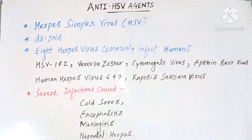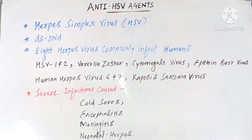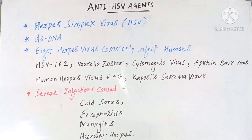These are the following severe infections caused by HSV virus: first, cold sores; second, encephalitis; third, meningitis; and fourth, neonatal herpes. Apart from these severe infections, HSV virus also causes common recurrent infections affecting the skin, mouth, lips, eyes, and genital organs.